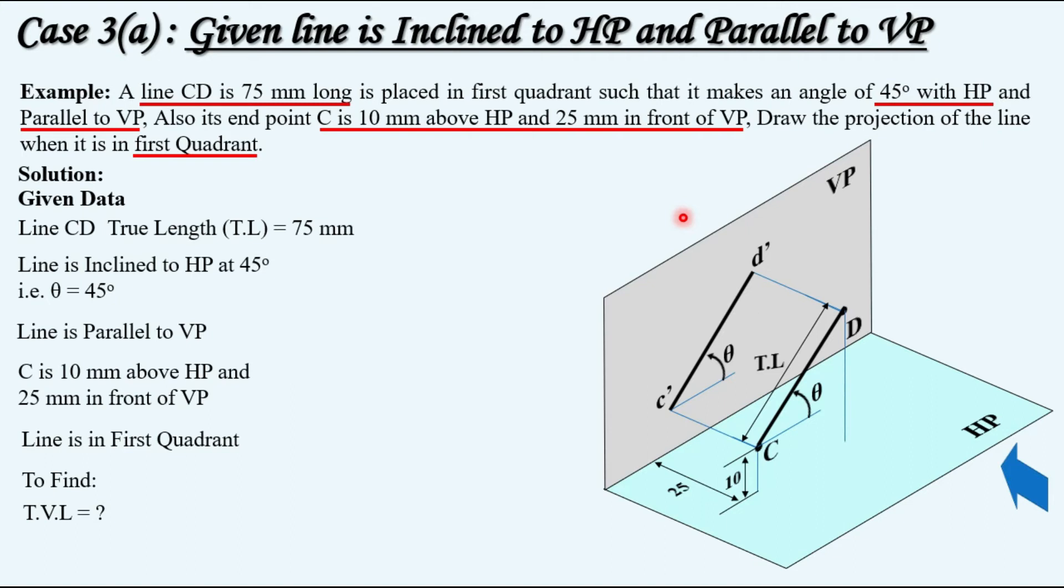While projecting its top view on horizontal plane, we will get C and D as top view points, and the line joining CD is the top view of the given line CD.